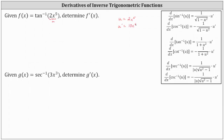Looking at the derivative formulas, the derivative of inverse tangent of u with respect to x is equal to one divided by the quantity one plus u squared, times u prime. In our case, f prime of x is equal to one divided by the quantity one plus the square of 2x to the fifth, then times u prime, which is 10x to the fourth.